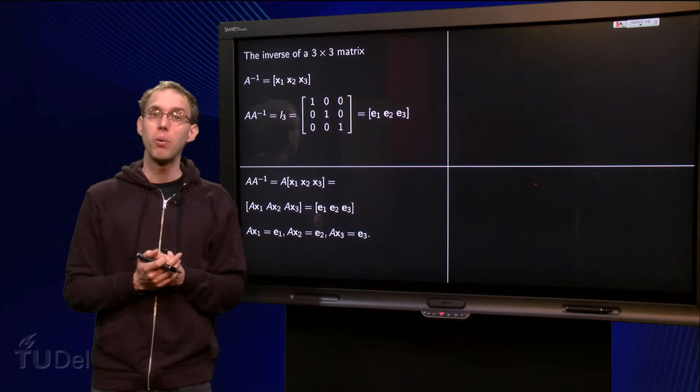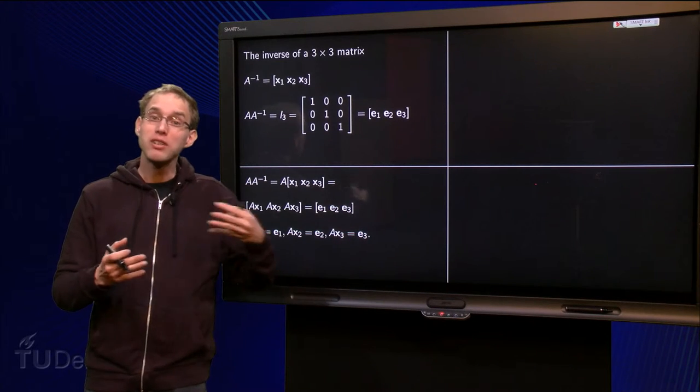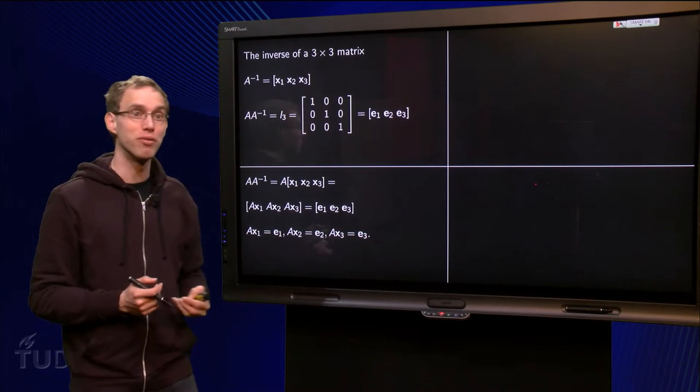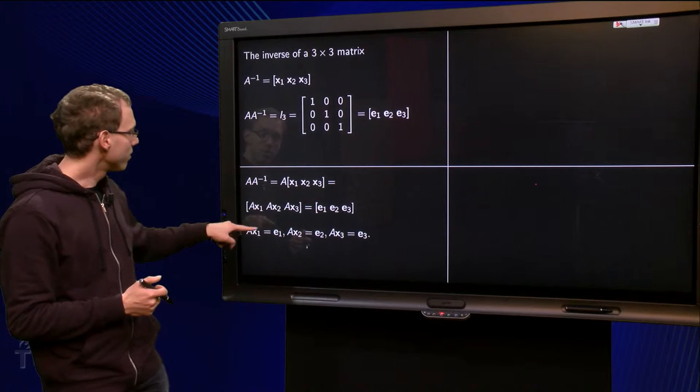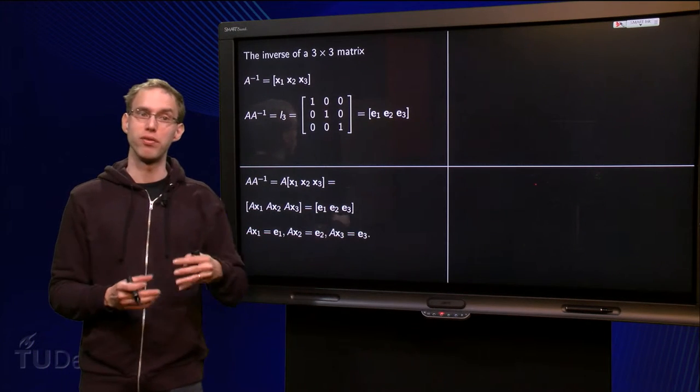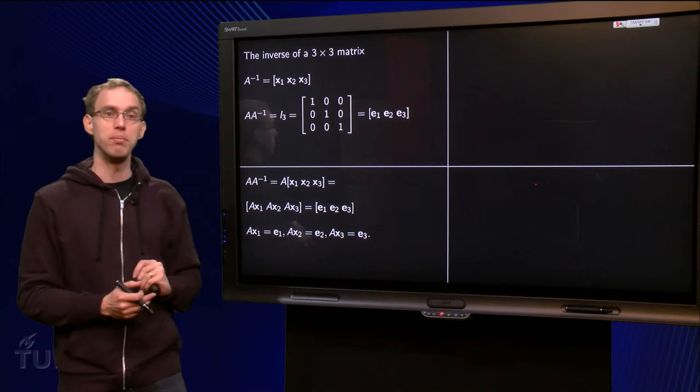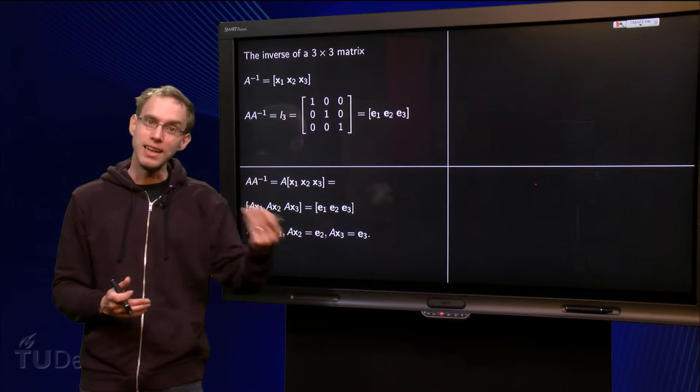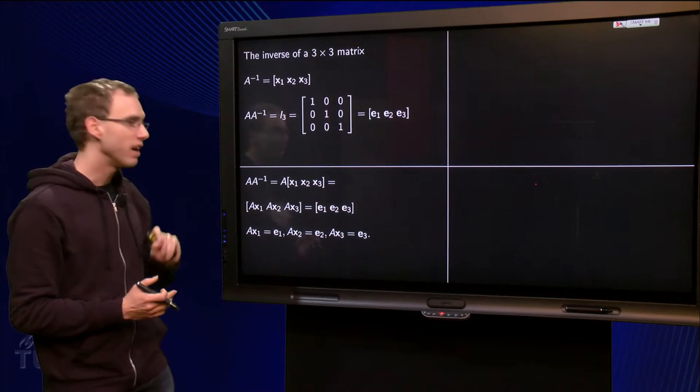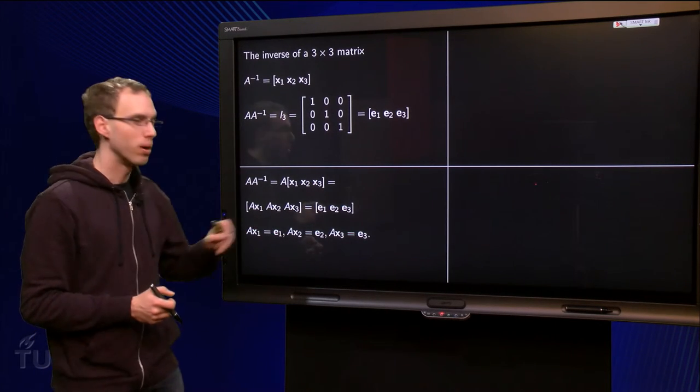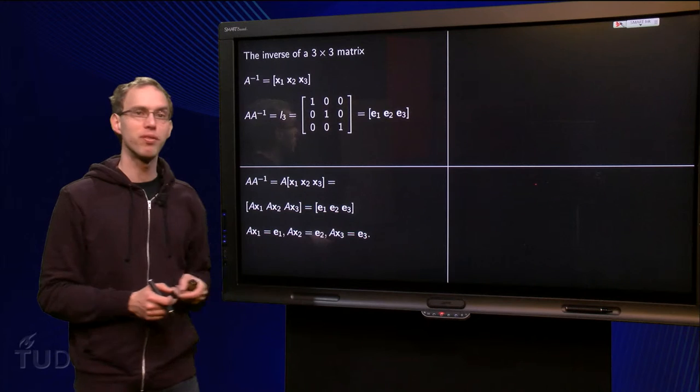But now we are back to a problem which we know how to solve, because we have here a matrix equation of the form Ax equals b, where both A and b are known. In this case the b equals 1, 0, 0, and the A is a known matrix. So we can find x1, similar problem for x2 and similar problem for x3.